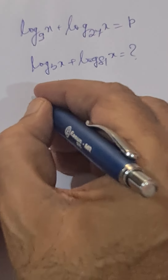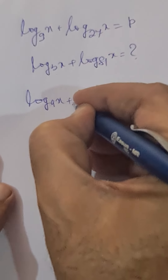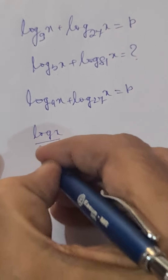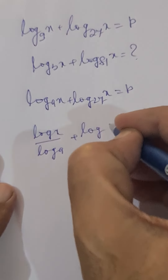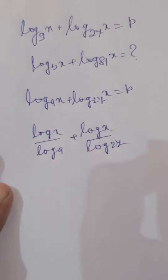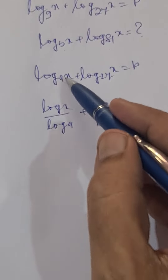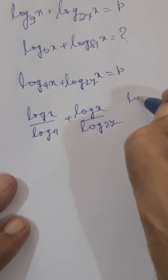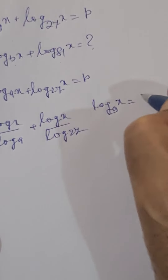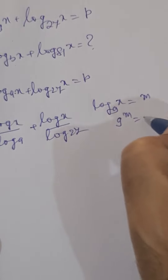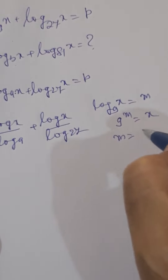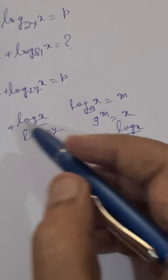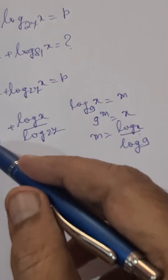We will do this manipulation: log₉x plus log₂₇x equals p. This we can write as log x upon log 9 plus log x divided by log 27. The base here is 10 using the change of base formula. Suppose log₉x equals m, so we can write 9^m equals x, or m equals log x upon log 9. We use this trick to rewrite the expression.